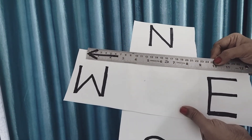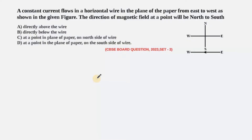I'm sure after watching this video all your doubts have been cleared. To summarize: the answer to this question is that the magnetic field is directed from north to south directly below the wire. This brings us to the end of this question. I hope you understood it. Please like, share, and subscribe to Sigma Physics Online. Until the next question, keep practicing.